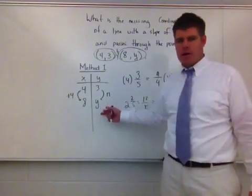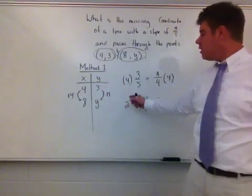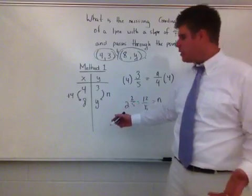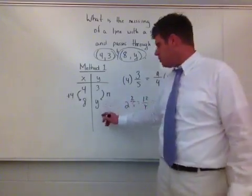So what I now do is I have positive 2 and 2 fifths is n. So all I have to do is now come back to my chart and go, from 3 to y, it's plus 2 and 2 fifths n. 2 and 2 fifths is going to be the same thing as 3 plus 2 and 2 fifths, which is 5 and 2 fifths.